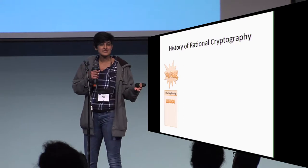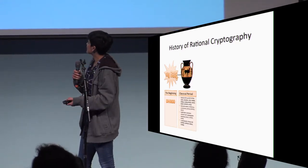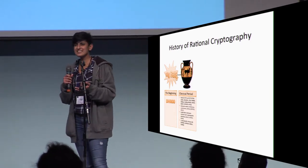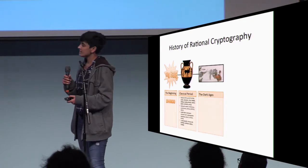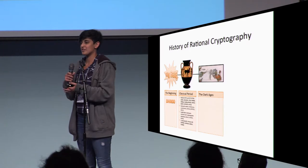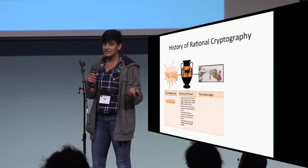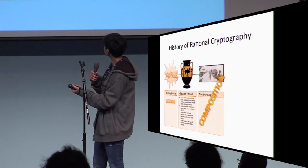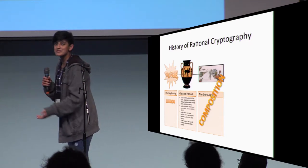That ushered in somewhat of a golden age with lots of research in the area — many papers were published. Then things started to slow down a little bit. Some say a big reason for this was that we didn't really have a composition theorem. And with that, I'll let Ira explain composition.